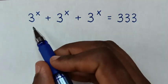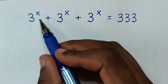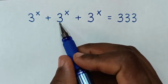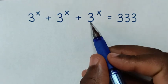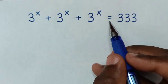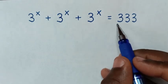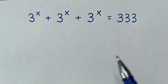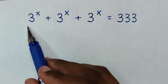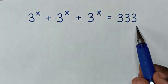Hello. How to solve 3 power x plus 3 power x plus 3 power x is equal to 333 — to find the value of x from this equation.